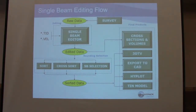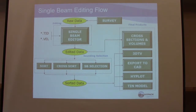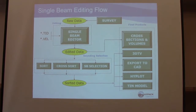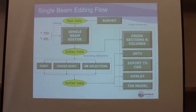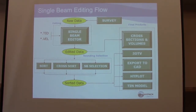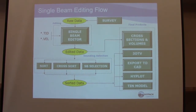First thing we want to talk about is our single beam workflow. HiPAC records data in a raw file format. Our raw files are an ASCII readable file — something you can open in a text editor and actually read the words, numbers, and letters. The difference between ASCII and binary: binary is something only a computer can read, ASCII you can open in a text pad. When you call us and say something's wrong, we can open it up and go through it — the tech support team understands what all those digits and numbers mean.